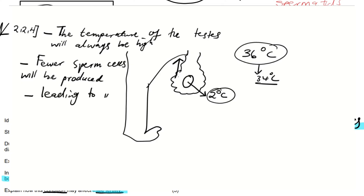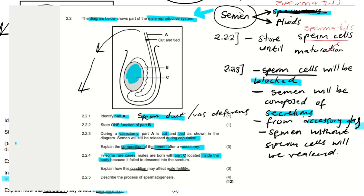We have explained the consequence of the testes being closer to the body. They will always receive higher temperatures from the body, produce fewer sperm cells, and that will eventually lead to infertility. When somebody is infertile, it means they cannot reproduce — they do not have enough sperm cells.